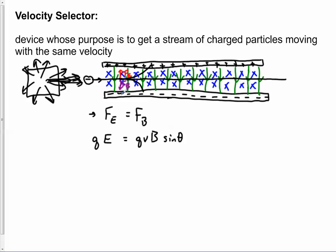But once again, we have a 90-degree situation here, so this is just one, so I can just get rid of that. Notice that the q's cancel now, and so I just have E equals vB, so v is E divided by B.